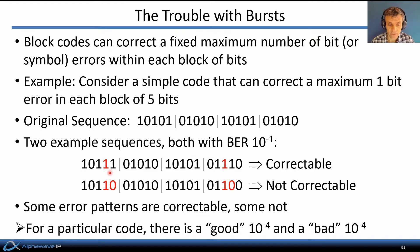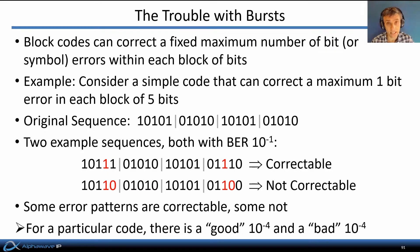On the other hand, if both bit errors happen to land in the same block of five bits, the pattern becomes uncorrectable. So although we have the same average pre-FEC bit error rate in both cases, we will have very different post-FEC bit error rates. Some error patterns are correctable, some are not. For a particular code, there can be a good bit error rate of 10^-4 and a bad bit error rate of 10^-4, depending on the pattern of errors, which in turn depends on the underlying transceiver architectural choices.